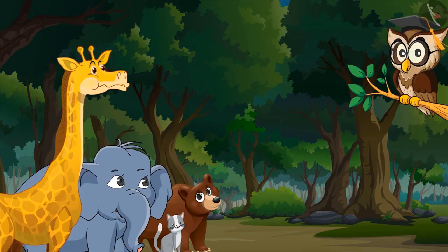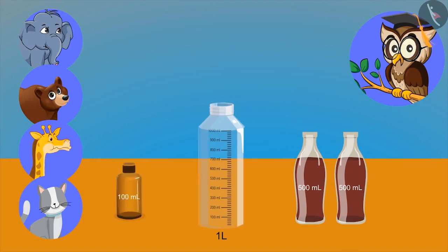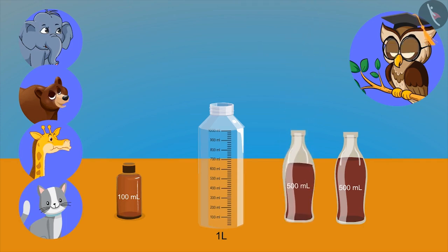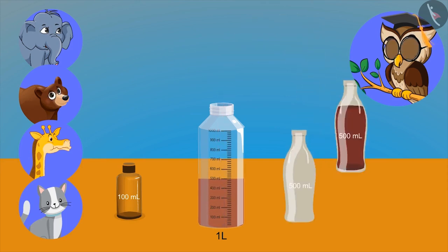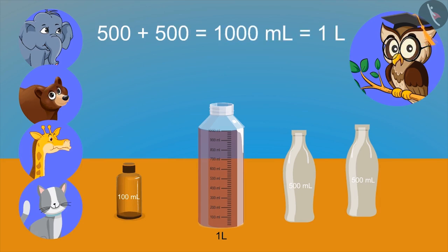Sir, please show some more examples. Look, I have two bottles of cold drink and these empty bottles of one liter and one hundred milliliter. Now you try to pour this cold drink into this empty bottle. We cannot put five hundred ml in a hundred milliliter bottle. Now try to put this in the empty bottle of one liter. Oh, it became full now. So what have we learned from this? Two five-hundred-milliliter bottles make a liter. Yes, right. Means on adding five hundred milliliter to five hundred milliliter we get one thousand milliliters. Five hundred ml is also known as half a liter.